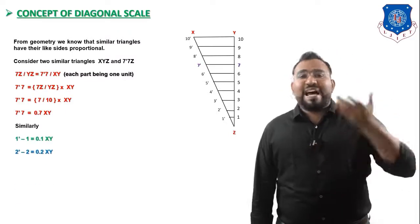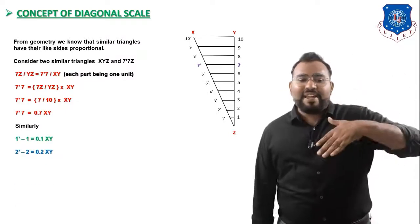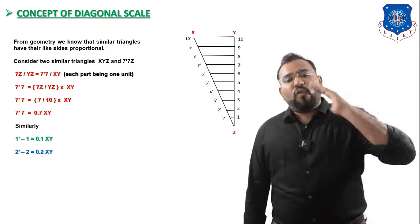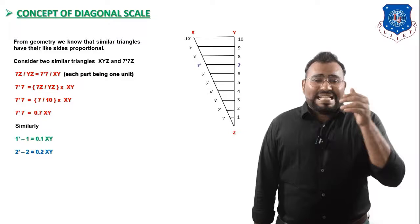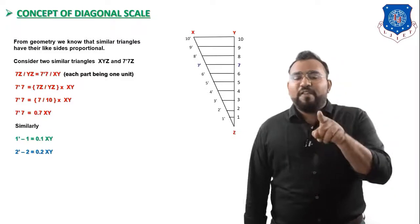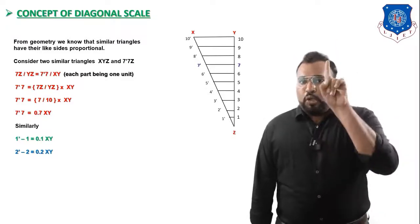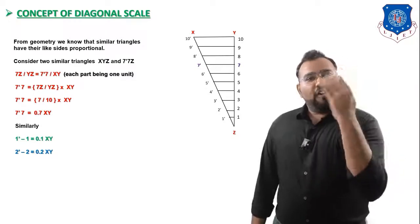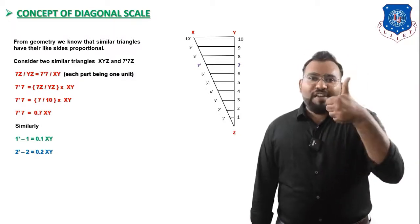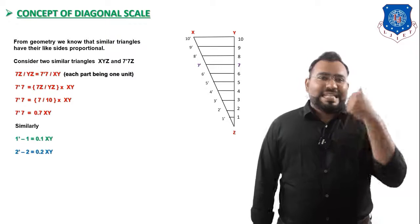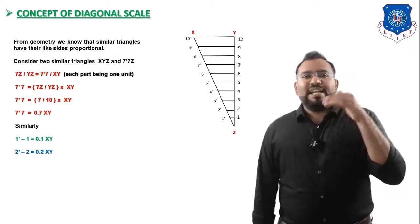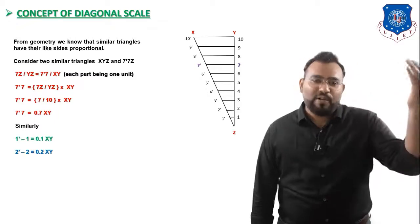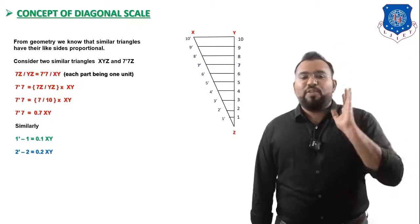In simple terms: 1-1-dash equals 1 unit, 2-2-dash equals 2 units, 3-3-dash equals 3 units, 4-4-dash equals 4 units, 5-5-dash equals 5 units, 6-6-dash equals 6 units, 7-7-dash equals 7 units, 8-8-dash equals 8 units, 9-9-dash equals 9 units, and 10-10-dash equals 10 units.